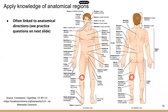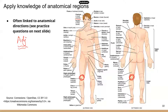Today I'm going to go over the terms used as adjectives, not the noun. Let's start with the head. Cranial refers to the head area. You may also see cephalic, which also refers to the head. The face is facial, and ocular refers to the eye.